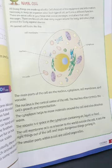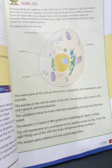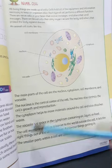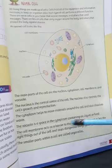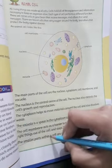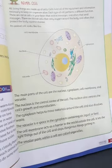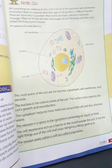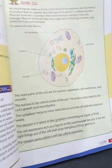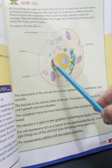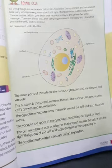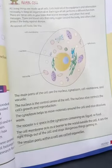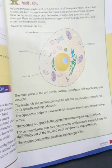Our body is made from cells. The smallest parts within the cell are called organelles. Organs like the kidney and stomach are made from cells, while organelles — such as the nucleus, cytoplasm, and vacuole — are the parts inside the cell.